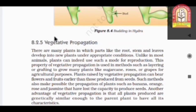Next one is vegetative propagation. Vegetative propagation means there are many plants in which parts, like roots, stem and leaves, develop into new plants under appropriate conditions. It's not necessary that each and every plant have the seeds for its reproduction. Some are also like that they don't have seeds and they are grown from their roots, stems and leaves. This method of reproduction is known as vegetative propagation.